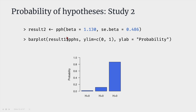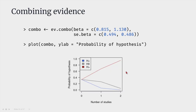To analyze both studies together and accumulate all evidence, the easiest approach is the evidence combination function, where we feed in the estimated effect sizes and standard errors as vectors. Plotting the result shows the probability of each hypothesis on the y-axis and number of studies on the x-axis. Starting at study zero with equal prior probabilities, after study one the positive effect size hypothesis increases, and after study two it increases further, while the other hypotheses decrease. With more studies, ideally one hypothesis would clearly dominate.